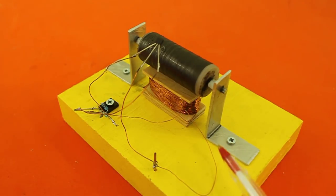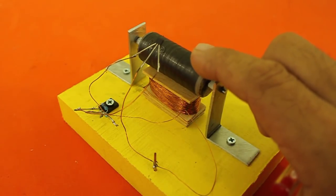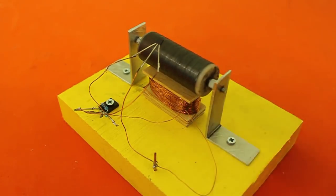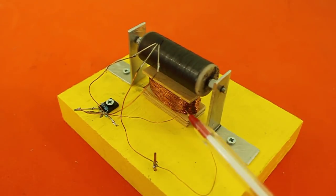So it repels the north pole of the magnet and makes it turn. Then the sensor deactivates and the coil is no longer active.